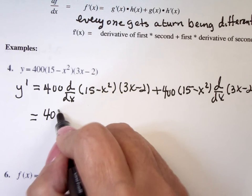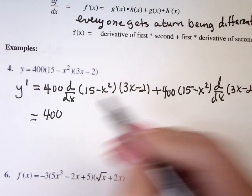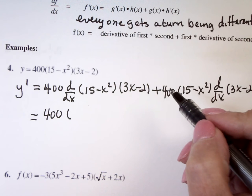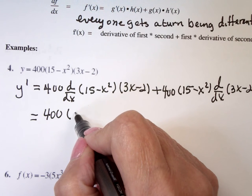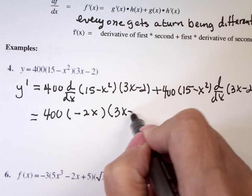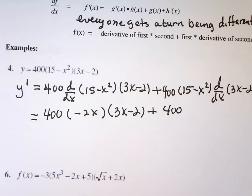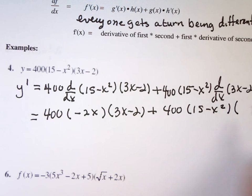So, it's 400. The derivative of 15 minus x squared is what? Derivative of 15 is zero. Derivative of minus x squared is minus 2x, right? Times 3x minus 2, plus 400, 15 minus x squared has already been differentiated, times, what's the derivative of 3x? Three. What's the derivative of negative 2? Zero.